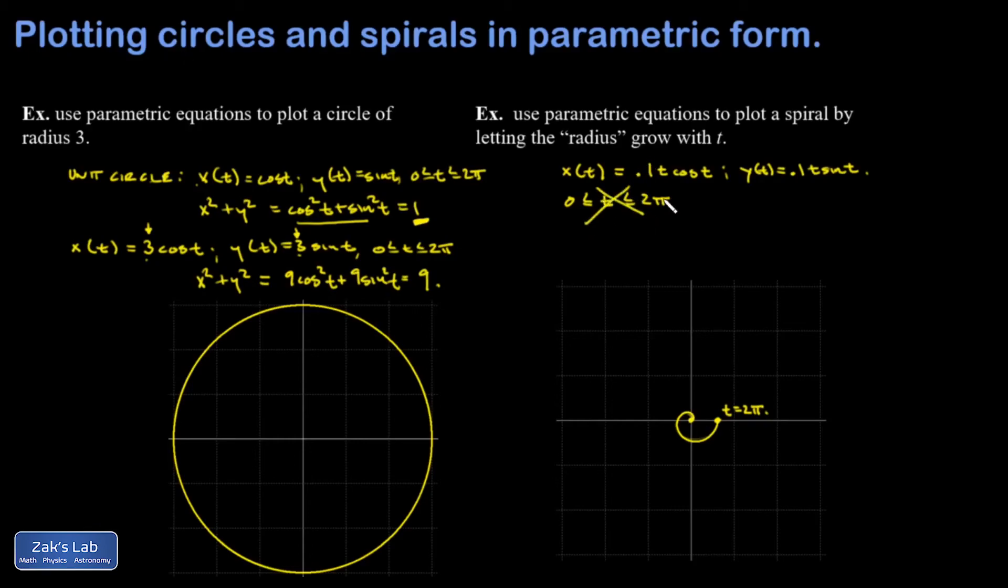So what I did was just replace that 2π with 100, and we should be able to go around and around as the radius grows and build the spiral.